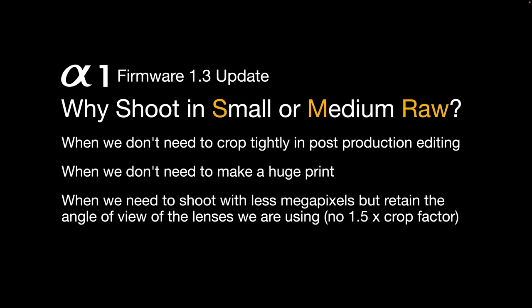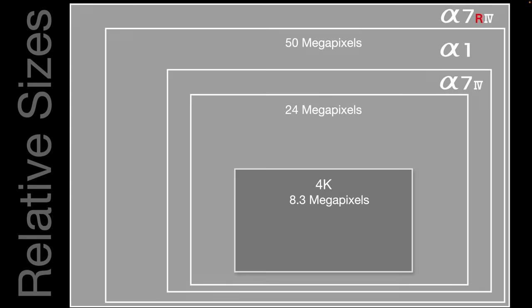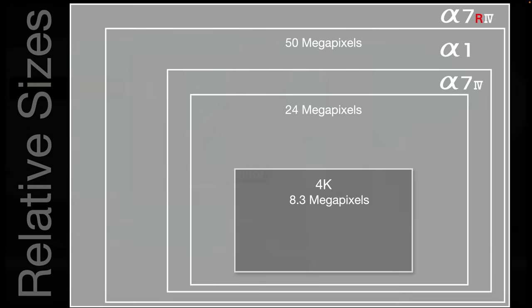So this will be a popular update for some, but not all photographers. This slide shows the relative sizes between sensor resolutions used in different cameras, and how many pixels we actually need to fill a 4K screen — which is just 8.3 megapixels. So even with the Alpha 7 IV at 33 megapixels and the Alpha 1 at 50 megapixels, we've got way more pixels than we actually need for preparing images for 4K screen viewing.